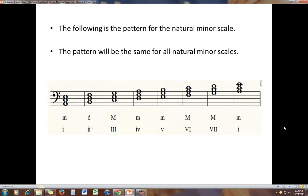This is the pattern for a natural minor scale. If you recall, it's going to be all the same notes as the major scale to a natural minor scale, all the same notes in different order. It's going to be the same thing with triads: all the same triads just in a different order. So we have minor one, diminished two, major three, minor four, minor five, major six, major seven, back to minor one. And again, this pattern will be the same for all natural minor scales.